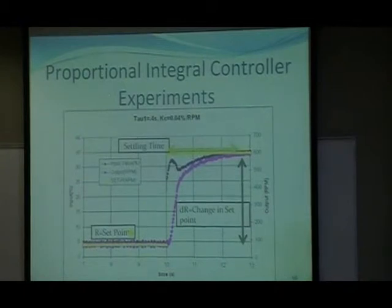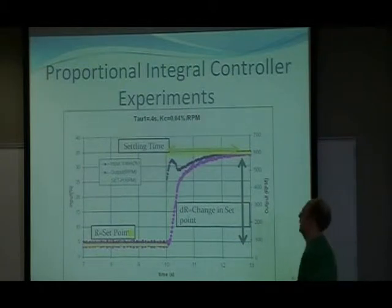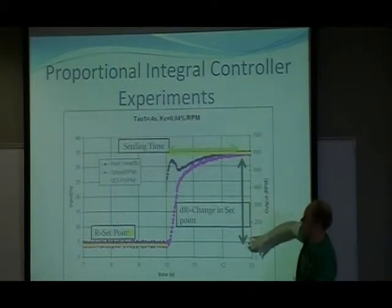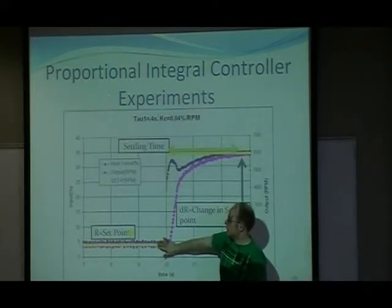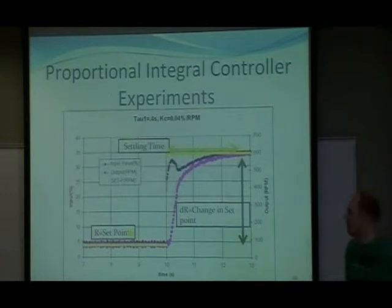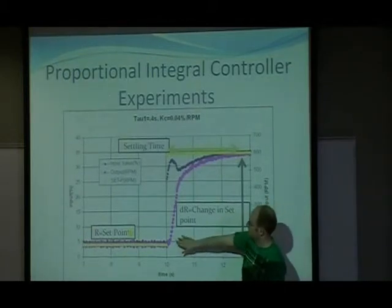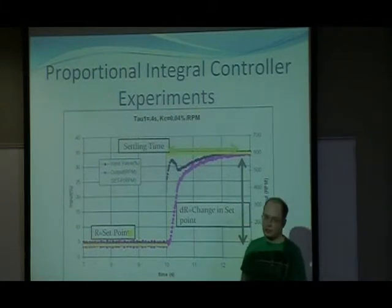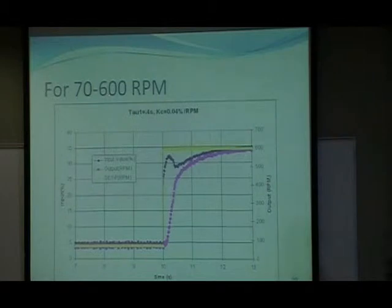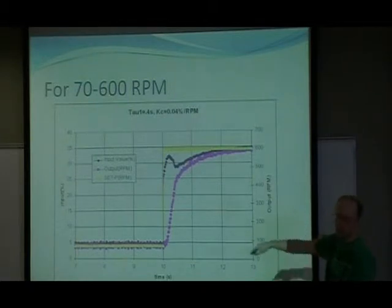This is an example of the proportional integral control experiments that we performed. You can see the settling time here, the delta R change in the set point, the initial set point, and the final set point. You can see how it ramps up after the set point is changed. This is the normal case, or the normal tau value for a critical damp KC for this lower operating range.